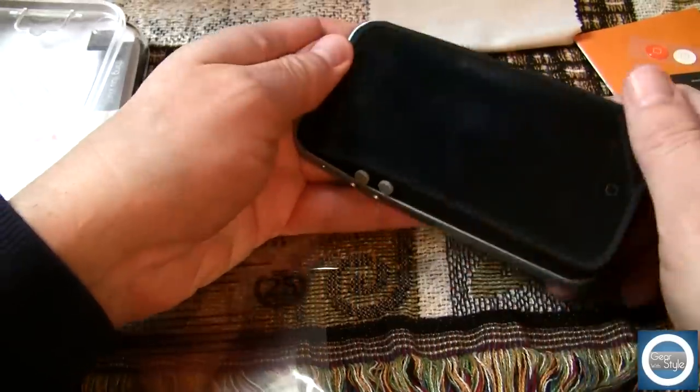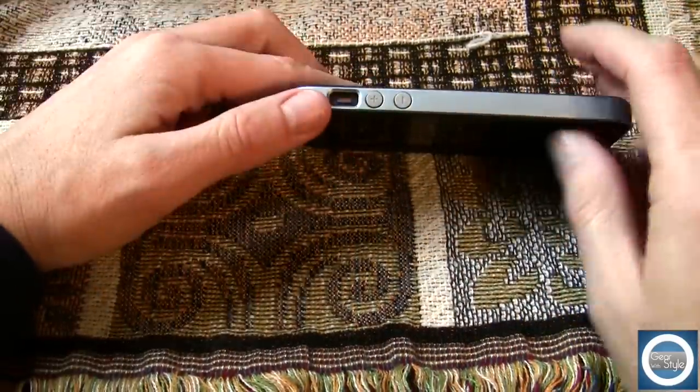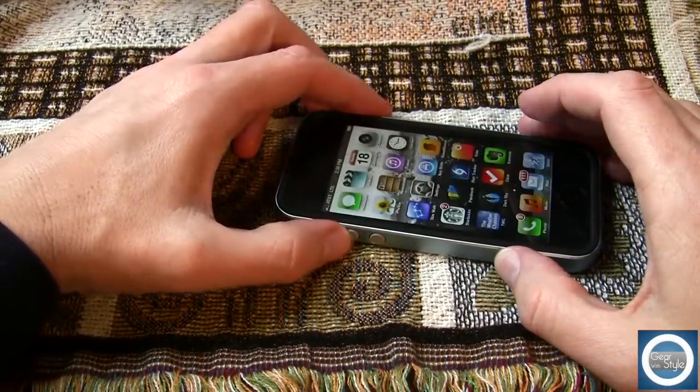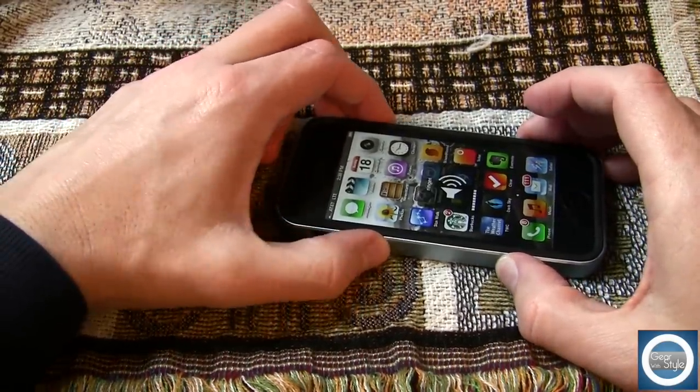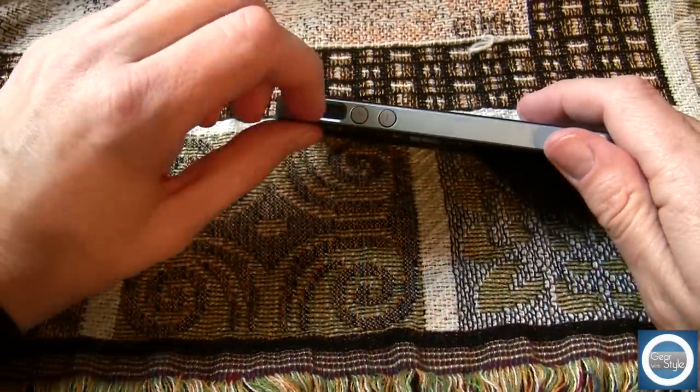And then once you install the hardened frame, the polymer frame, at that point you get a really good bumper case. And you can tell where there is that extra protection in case you do drop it on the corners or on the tops or the bottom of the iPhone which is great to have.